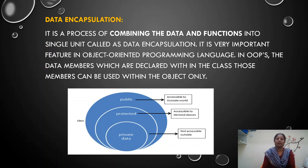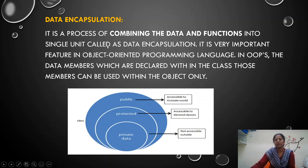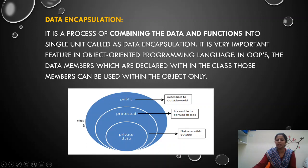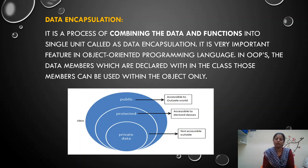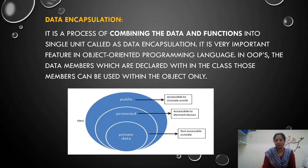The next important concept is data encapsulation. It is a process of combining the data and functions into a single unit called data encapsulation. We are combining them into a single unit called an object. A class contains different members; all members are grouped into a single name called the class name. Using that class name, we can access the data with an object. Without an object, data members and functions cannot be accessed. OOP gives more importance to data rather than the function. We are protecting the data with access specifiers, so OOP gives more security to your data than procedure oriented programming. This is called encapsulation.